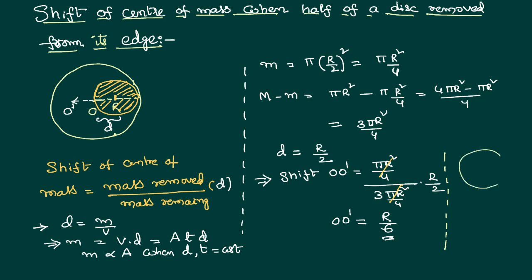Suppose you have a disc whose center of mass is at O. If you remove a portion uniformly and symmetrically from the disc, the shift of the center of mass is zero. Why? Because removing mass symmetrically does not make any side of the disc heavier than the other. If the removal is done equally from all parts, the center of mass remains at the same place. The shift of the center of mass only occurs when you remove mass from one edge or corner.